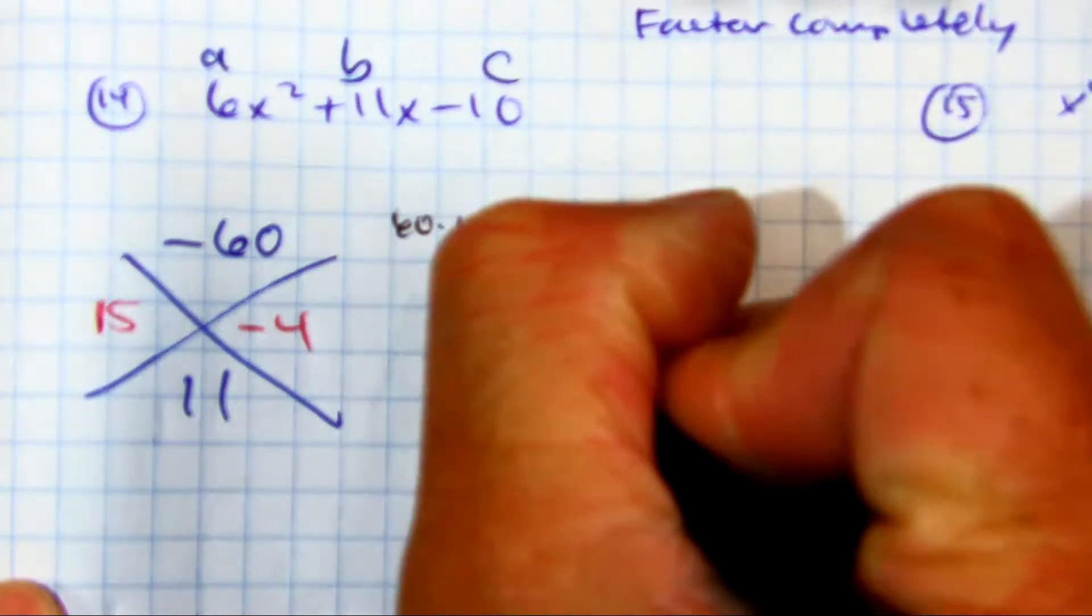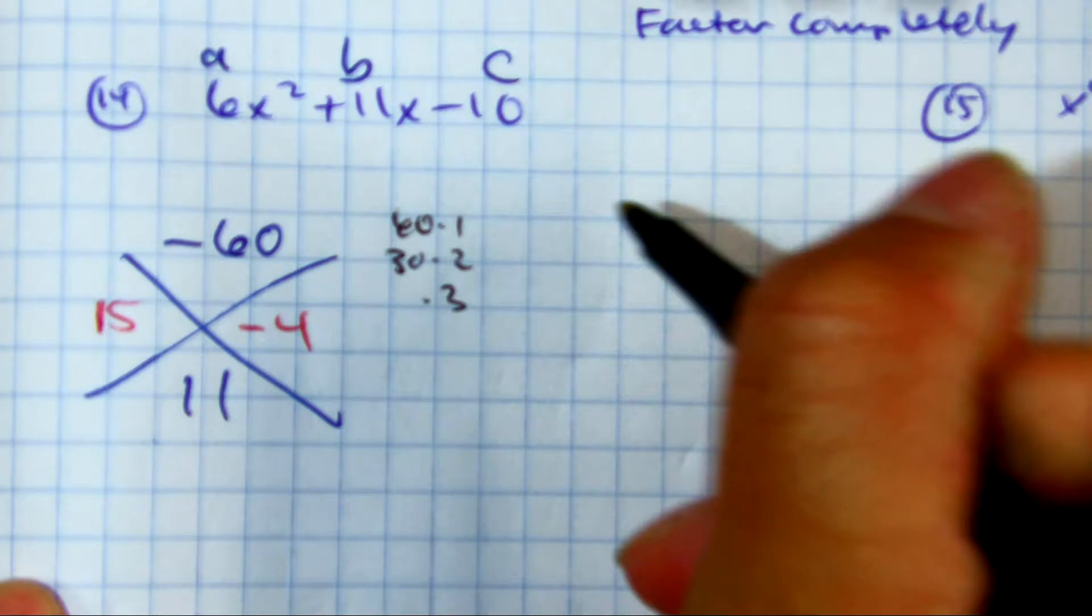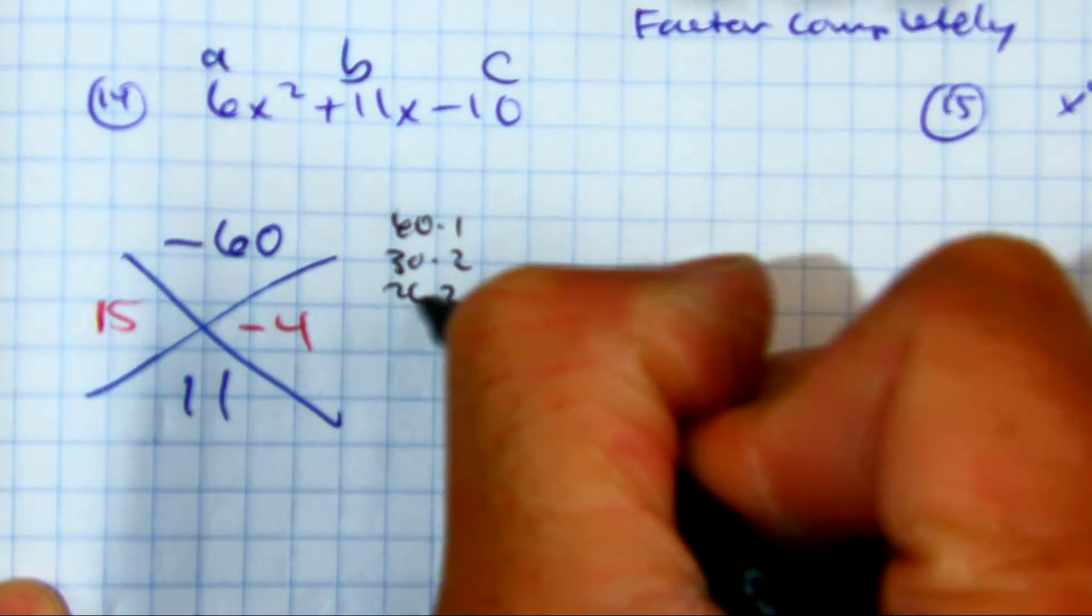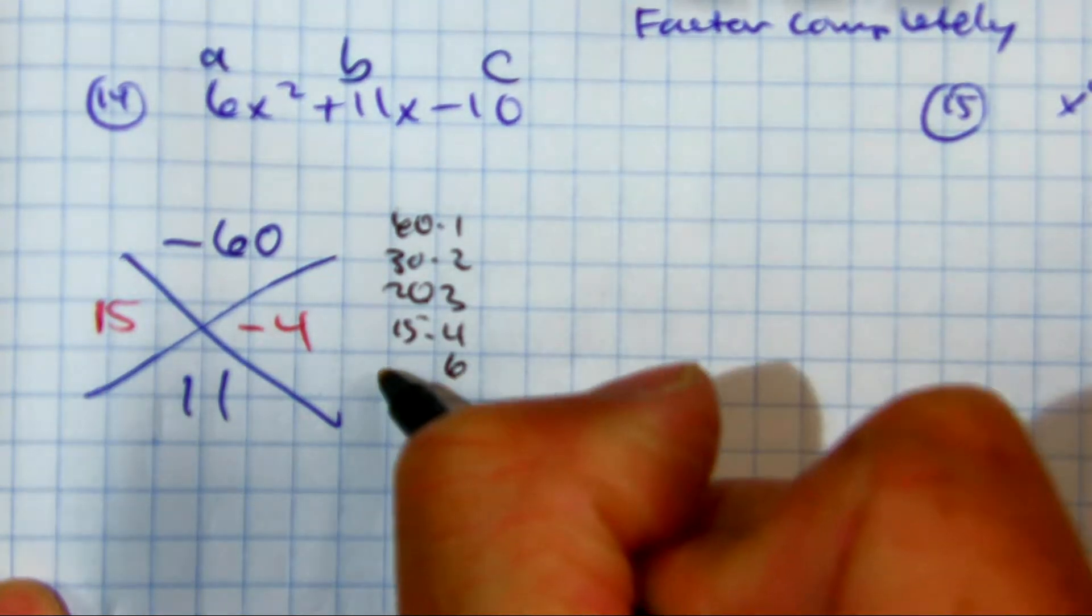60 times 1. 30 times 2. 3 times what? 4 times. 6 times. 5 times.